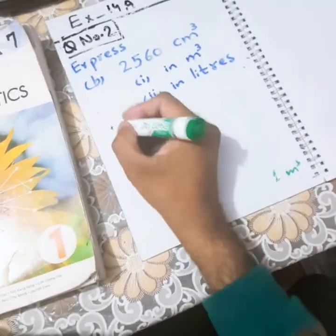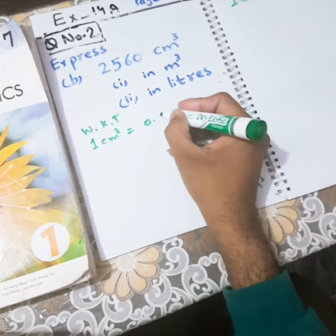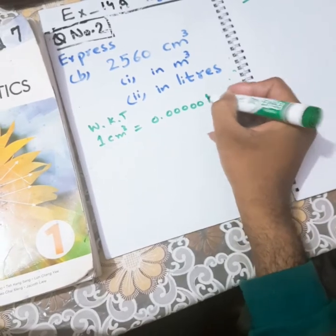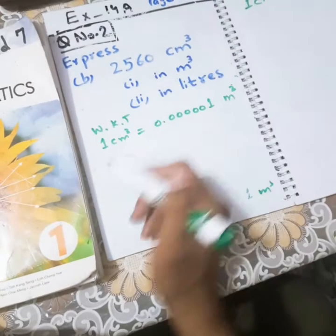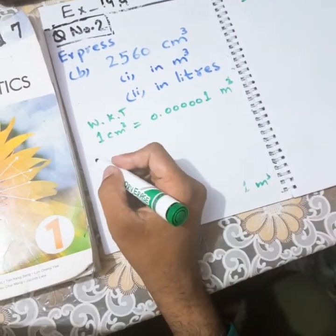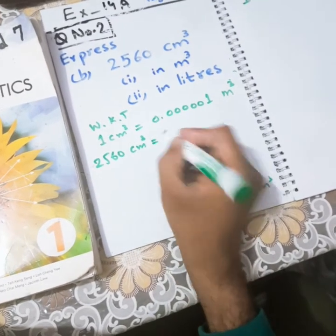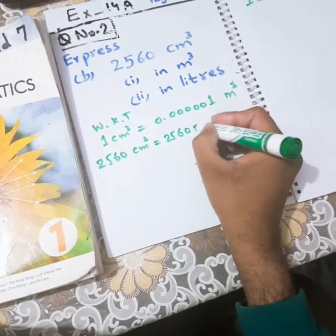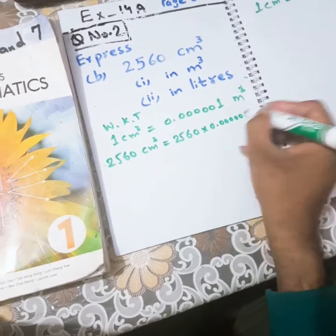So we know that 1 cm³ is equal to 0.000001 m³. So here we have to convert 2560 cm³. So 2560 will be multiplied on both sides. 2560 cm³ will be multiplied with this one and on this side 2560 multiplied by 0.000001 m³.